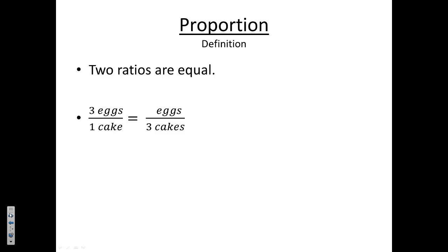For example, I have two ratios: it took three eggs to bake one cake. How many eggs would it take to bake three cakes? Obviously nine. So we have two ratios: three eggs for one cake, and nine eggs for three cakes. Notice something really important — if you cross-multiply, meaning you multiply the top of one fraction by the denominator of the other, three times three gives you nine, and one times nine also gives you nine. Something always true about proportions: when you cross-multiply, the products should be equal.